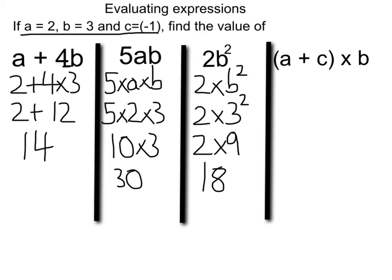Lastly, a plus c in brackets times b. So first, as you remember, put in our numbers. We get 2 plus negative 1, put that in a bracket, times by 3. BODMAS, the b is for brackets, so we do 2 plus negative 1. Well, 2 plus negative 1 is 2 minus 1, so that's just 1 times 3, and that is 3. So there you go, four questions on evaluating expressions.